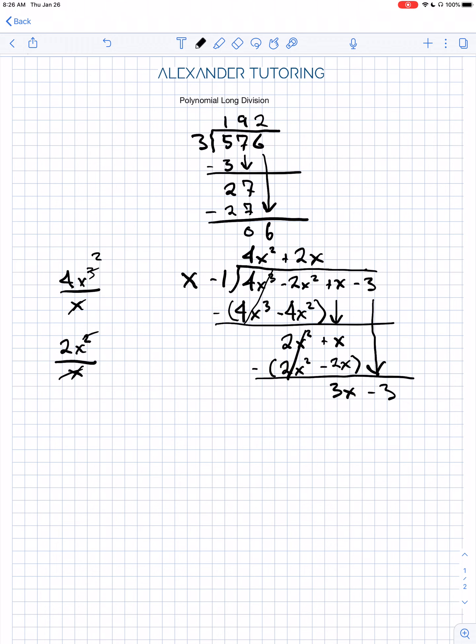x goes into 3x three times. And we multiply 3 times x minus 1 to get 3x minus 3. And you can see that this is a perfect factor. x minus 1 divides perfectly into this polynomial because, in this case, we get no remainder.